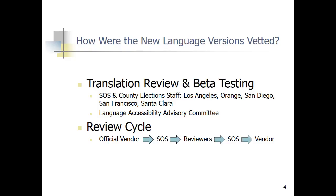We translated the website into 10 languages through a very collaborative process. We worked with several counties who had election staff who speak those languages. We also worked with the Language Accessibility Advisory Committee, a new committee headed up by Eugene Lee, which has language experts throughout the state. We had an official translation vendor, but when we received translations back we would share them with our reviewers, get their feedback, send that feedback back to the vendor, and adopt changes as needed. The reviewers were involved from the beginning and were able to see not just the translations but the actual test website.